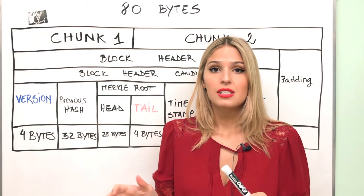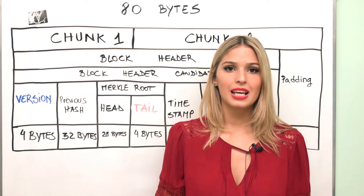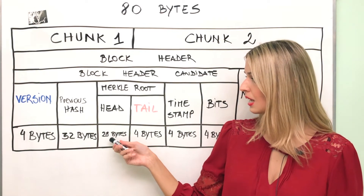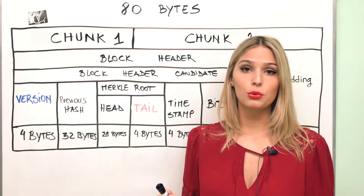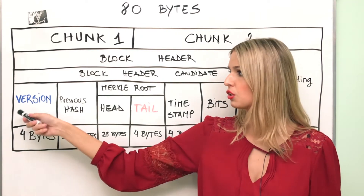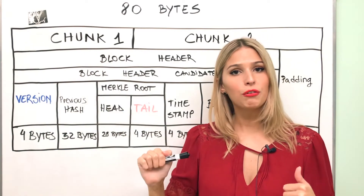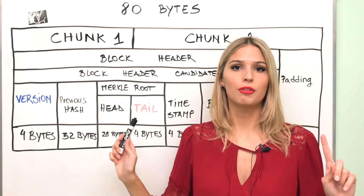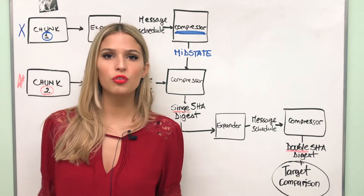The main difference between covert and overt ASIC Boost is the following: with covert ASIC Boost we're going to be focusing on the first 28 bytes of the Merkle root, while overt ASIC Boost focuses on the version field of the header of the block. And the version field of the header of the block is the focus of this video.